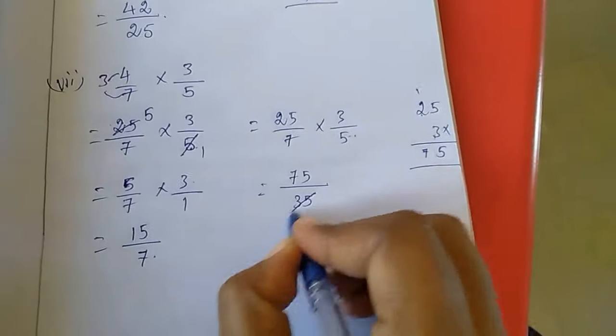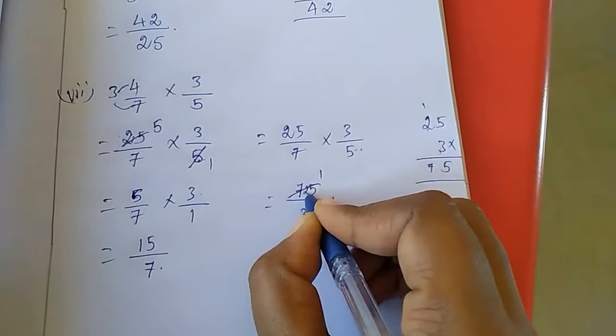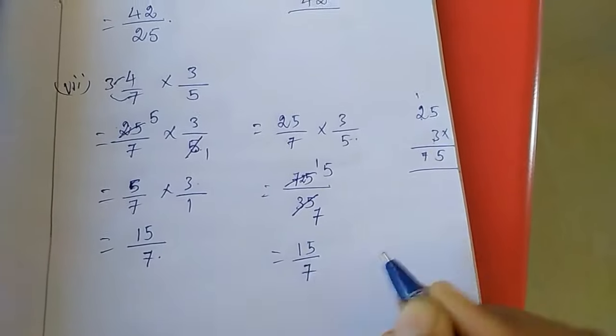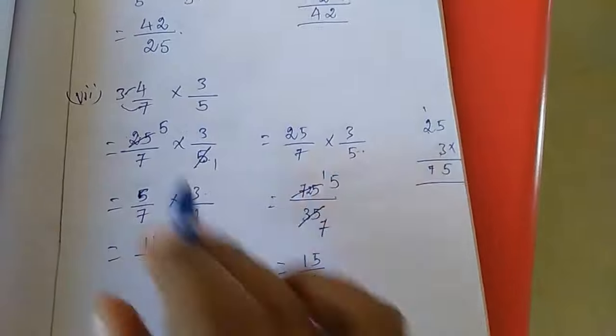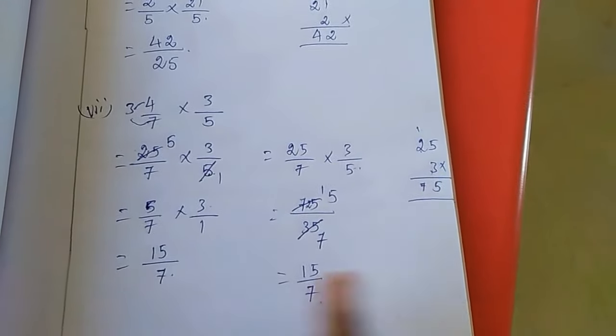Here the answer is 75 divided by 7 times 5 is 35. Now also we can cancel by 5 table: 5 times 7 is 35. Here 1 times 5 is 5, so the answer is 15/7. Both methods will get the same answer only. This is one model, this one is another model. Which model you can understand easily, you can use that.